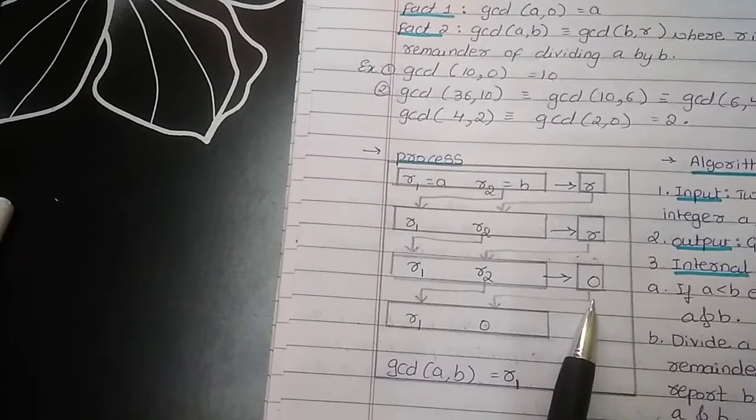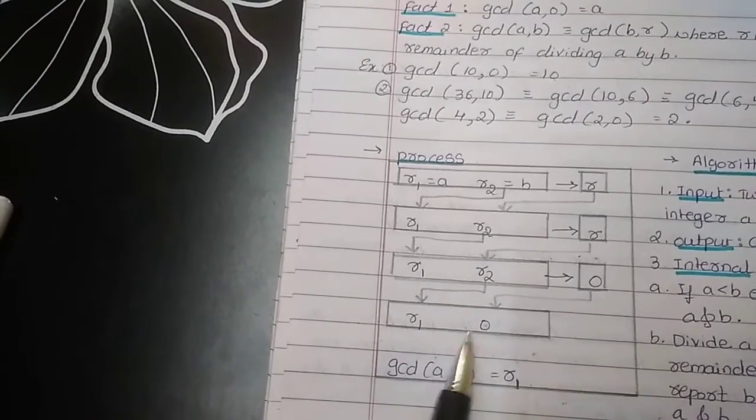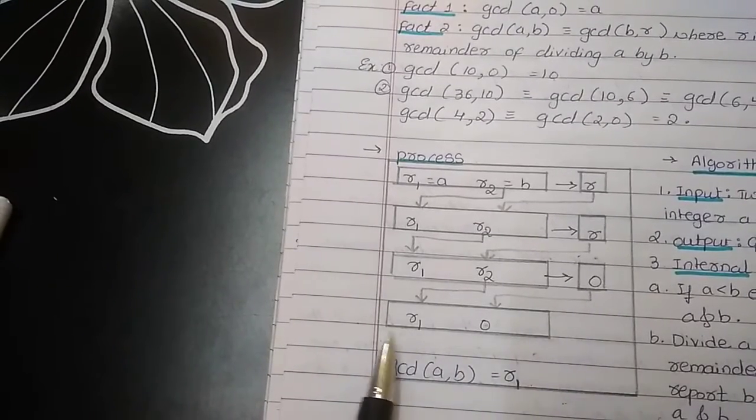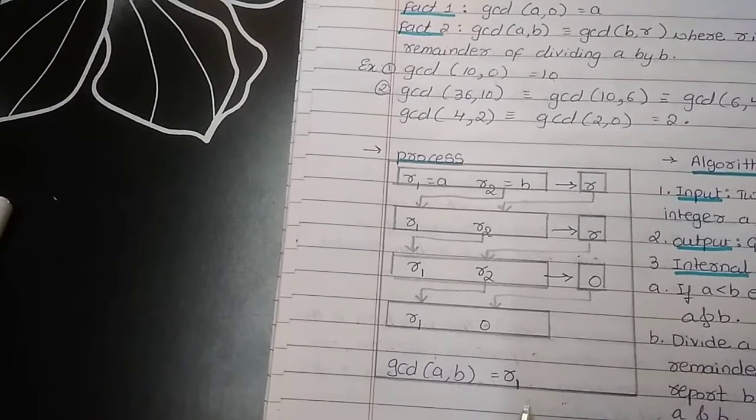As soon as the value of remainder is 0, R2 will become R1 and R2 will become 0. So, according to fact 1, the GCD of R1, 0 will be R1.